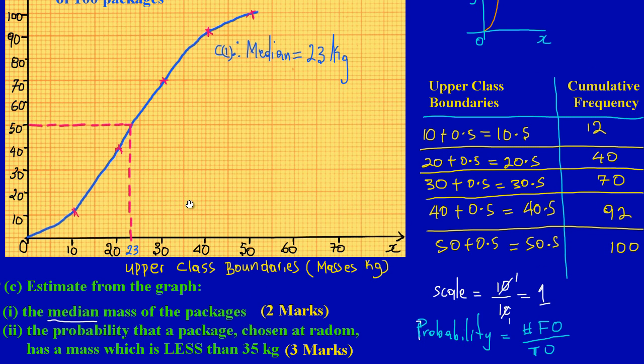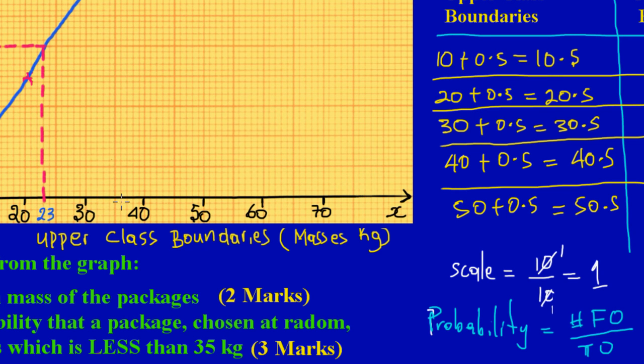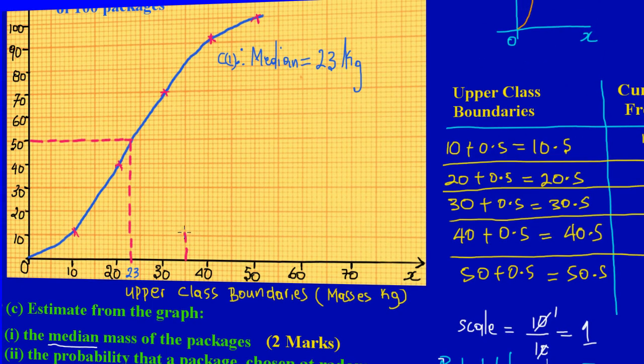Getting back to the question, they're asking us for the probability that a package chosen at random has a mass which is less than 35 kilograms. You're going to find 35 kilograms on your x-axis. 35 would be exactly between 30 and 40. So I'm going to come here at 35 and I'm going to use my ruler. I'm going up and I'm drawing a broken line straight up to touch my graph.